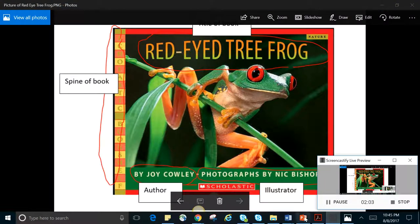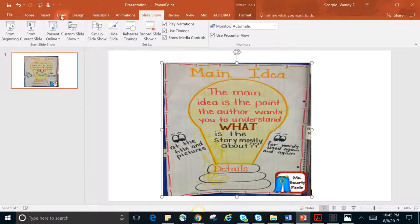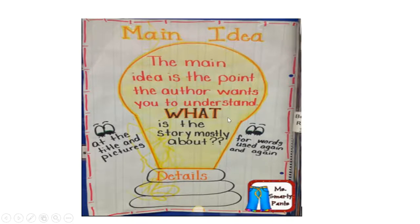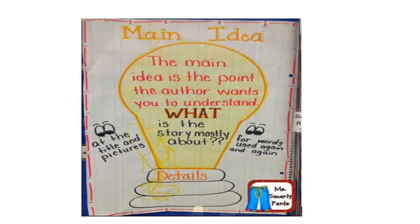Here it is — just to remember, the main idea is what the story is mostly about. It says look at the title and pictures, because the main idea can be found in the title or the pictures. Then it says look for words that are used again and again. There's one other place they didn't tell you: sometimes it can be in the very first sentence of a story.